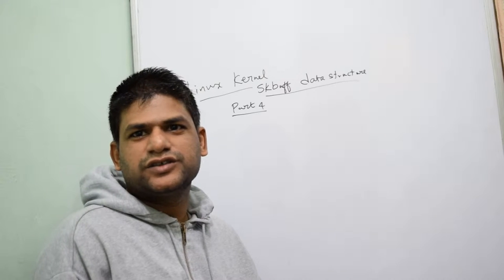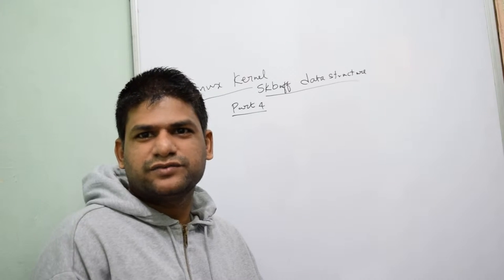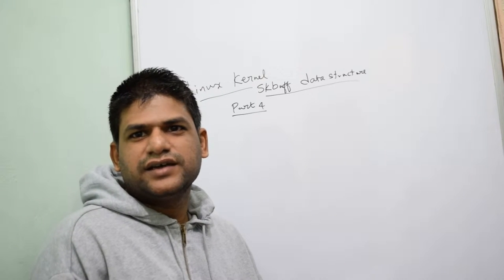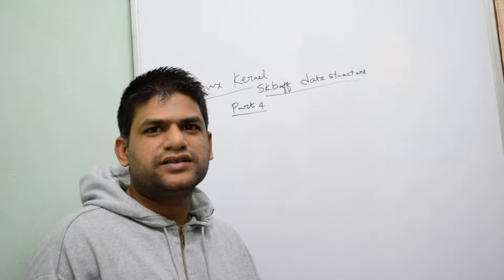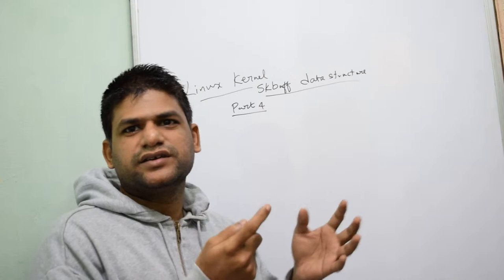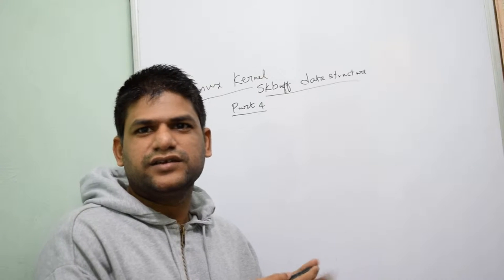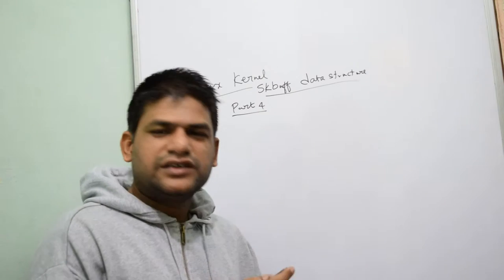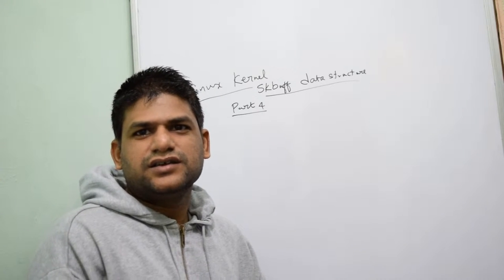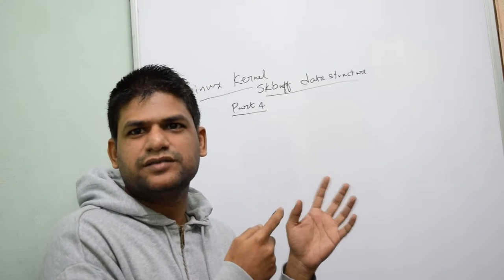Hi folks, welcome back to another new episode of Linux Kernel SKB Data Structure Series, and this is part 4. In my previous part, I discussed about how the packet flows across the Linux network subsystem, the way it gets created and sent across to the physical hardware device using device drivers and other network subsystem modules. In this segment, let's discuss how the SKB data structure is organized and how it can be used as a container, as described in the previous video.